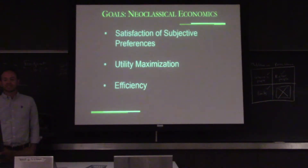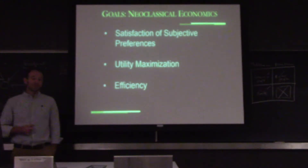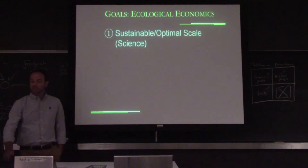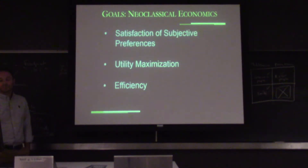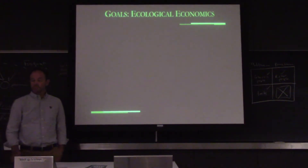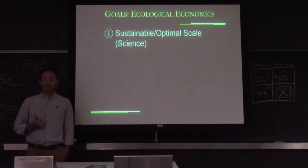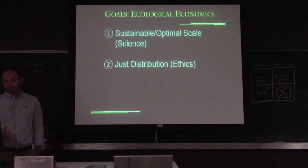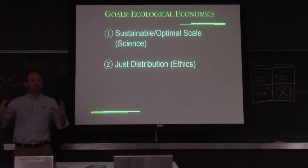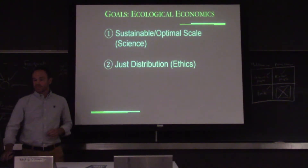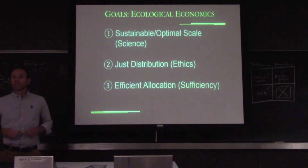The goals of neoclassical economics are the satisfaction of subjective preferences — weighted by purchasing power — maximization of personal utility, and efficiency. The goals for ecological economics put an order on things. The first is to set a sustainable and optimum scale for the size of the economy, largely by looking at science. Second, once we've decided how big our economy can be, we decide how to distribute those resources justly and equitably, drawing heavily on ethics. And then lastly, once we've done all that, we determine how to allocate these resources using sufficiency instead of efficiency.